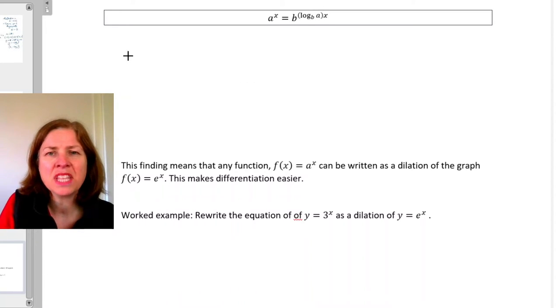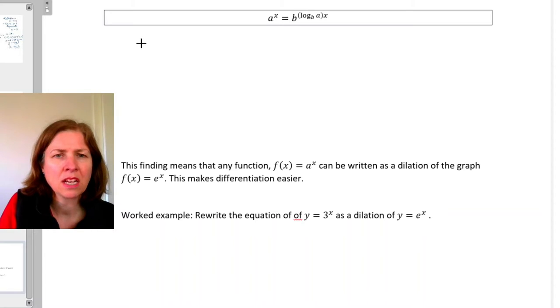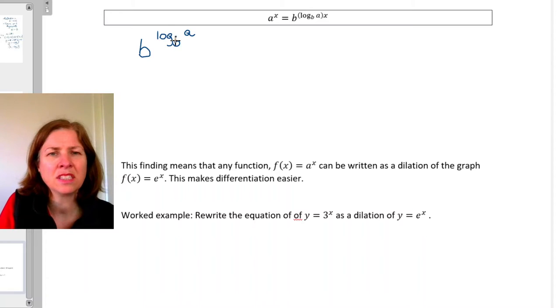Now seeing where this comes from is much more straightforward. First of all, you need to recognize that if I start with b and then raise that to the power of log base b of a, then because this is the inverse operation, b to the power of and then log base b, that cancels each other out and I just get a.